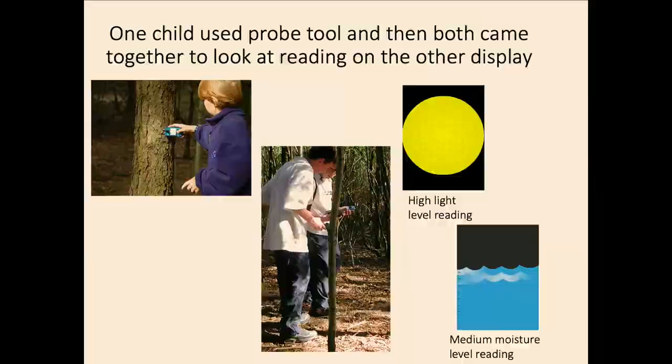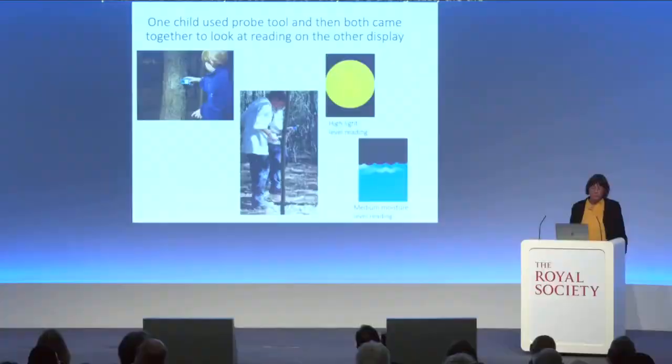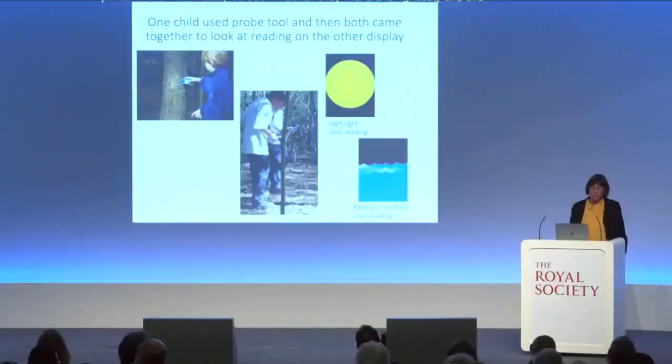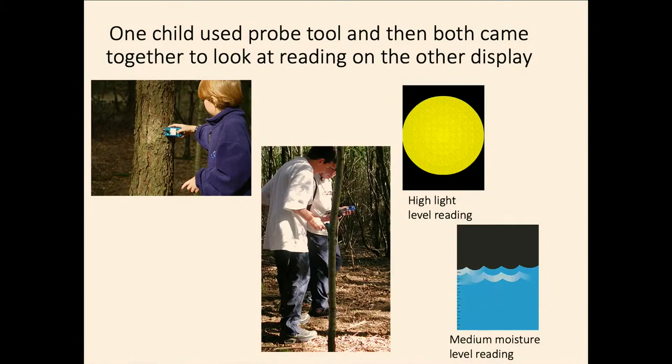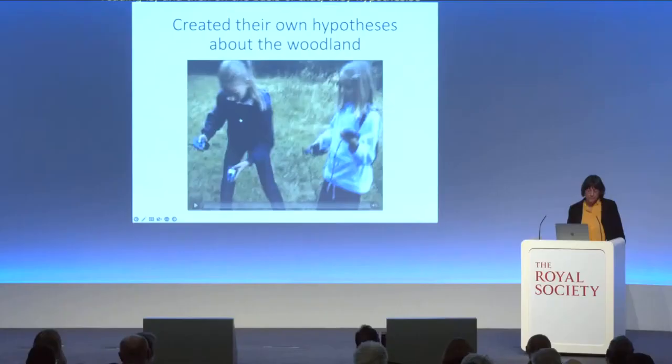An important part of working in pairs was that one child would probe with the device but wouldn't have the reading immediately — they'd have to join the other child to look at the display and talk about what they'd found. The visualizations were really simple, showing just relative levels, which would trigger them to think where to probe next. You can see how one does the probing and the other reads out the result, and then on that basis they hypothesize where to go next — which spot would be even drier or even wetter.